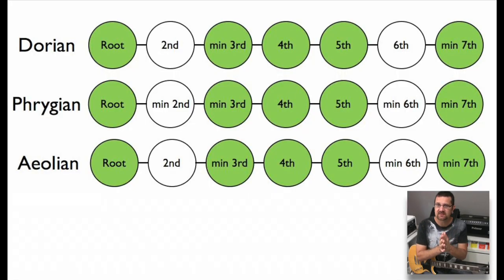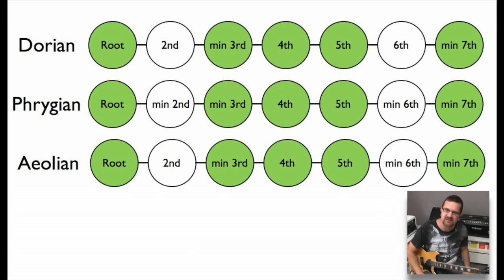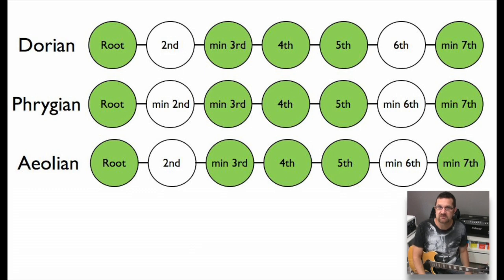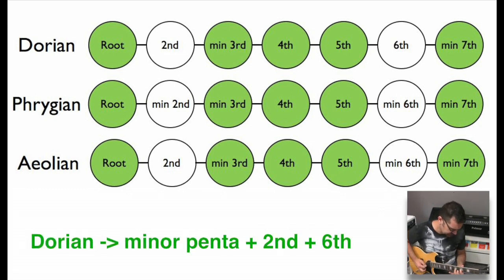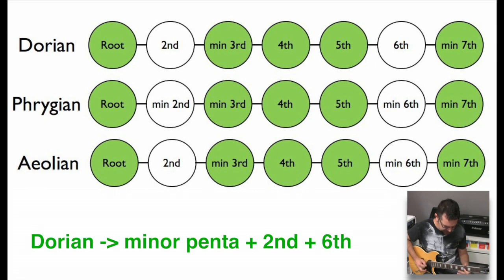The second and sixth can be minor or major, and we need to learn what type of second and sixth are used in the Dorian, Phrygian, and Aeolian. The Dorian is made of a major second and a major sixth. So I can see my Dorian scale as a minor pentatonic scale to which I'm adding a major second — here, here, and here — and a major sixth — here and here.